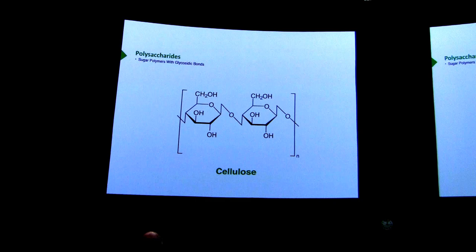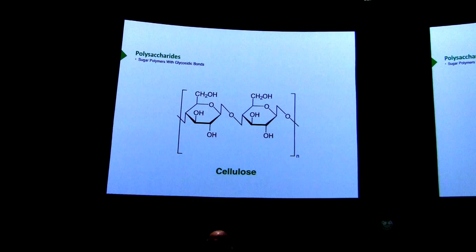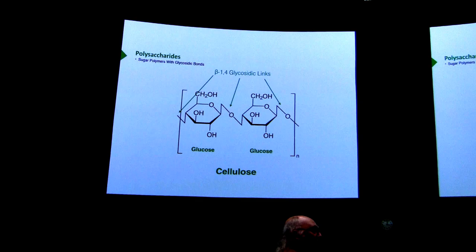Cellulose has beta-1,4 linkages between individual sugars. Using our typical numbering scheme, we can see where carbon number one is. Looking at carbon number one, the bond points up — that's always an indication of beta configuration — and it's joined to carbon number four of the other sugar.